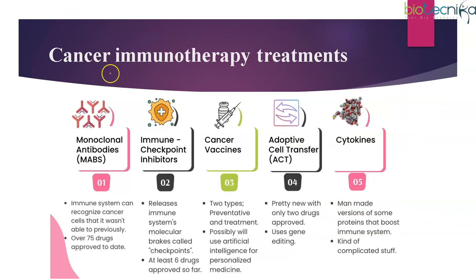For cancer immunotherapy, there are several treatment types. Monoclonal antibodies help the immune system recognize cancer cells it was previously unable to identify — over 75 drugs are already approved. Immune checkpoint inhibitors are another approach: in cancer, cells keep proliferating without controlled division. These inhibitors release the immune system's molecular brakes called checkpoints, preventing the cell from moving from one phase to another. At least six drugs have been approved so far.